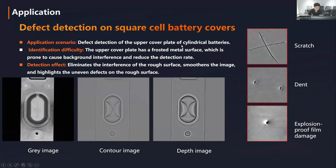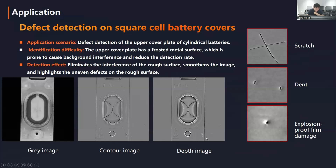Here is one of our cases using this system: defect detection on square cell battery upper cover plates, also used in the lithium industry. The difficulty is that the upper cover plates have a frosty metal surface, which is prone to causing background interference and reducing detection rate. With our Dome Light 2.5 dimensional system, it eliminates the interference of the rough surface, smooths the image, and highlights uneven defects. The gray image and depth image together allow easy identification of scratches and all defects on the surface.